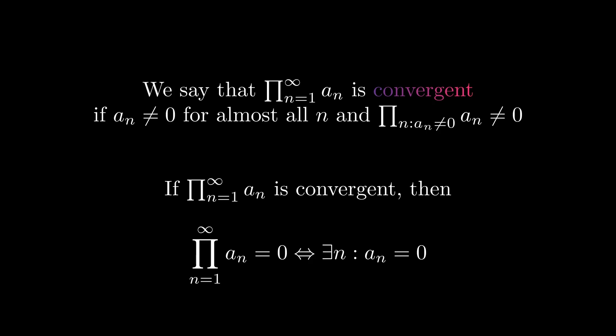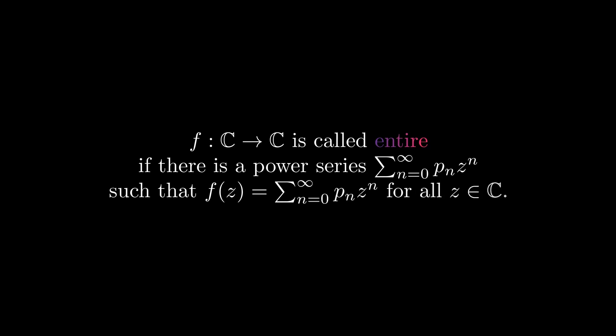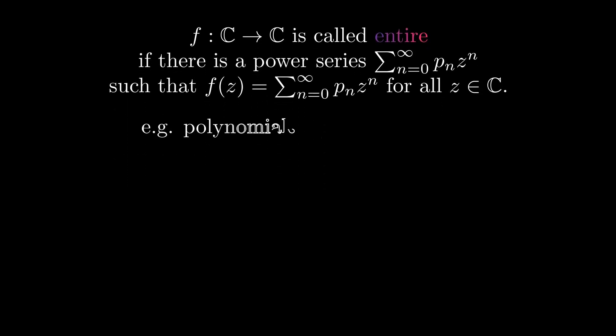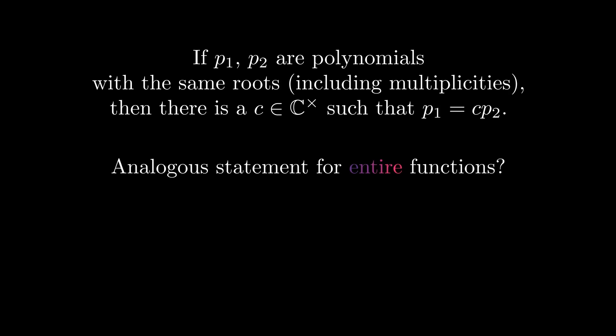Let's go back to our power series. The simplest case is if the power series converges everywhere. Functions on the complex numbers which can be represented by such a power series are called entire. For example, polynomials are entire. Entire functions which are not polynomials are called transcendental. These include functions like the exponential function and the sine. When trying to factor entire functions with their zeros, we need to know if a function is given uniquely by its zeros. In the case of polynomials, if two polynomials have the same roots, they only differ by a constant. Is there an analogous statement for entire functions?